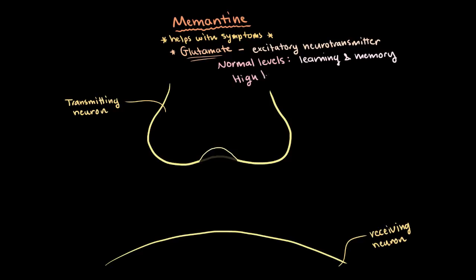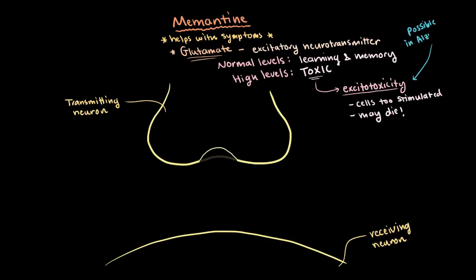When glutamate levels get too high though, it's actually toxic to the cell, and we use a word called excitotoxicity, where the cell gets actually too stimulated and may die as a result. Having too much glutamate is thought to be one possible way that people with Alzheimer's disease lose nerve cells, and therefore have problems with learning and remembering new things.